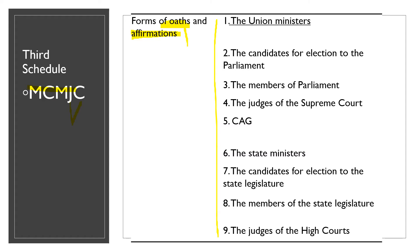In MCMJC: the first M stands for Ministers — Union Ministers at the union level and State Ministers at the state level. C stands for Candidates for Election to the Parliament at the union level and to the State Legislature at the state level. The second M stands for Members of the Parliament at the union level and Members of the State Legislature at the state level. J stands for Judges of the Supreme Court and Judges of the High Courts. And C stands for Comptroller and Auditor General. So this list can be easily remembered using the trick MCMJC.